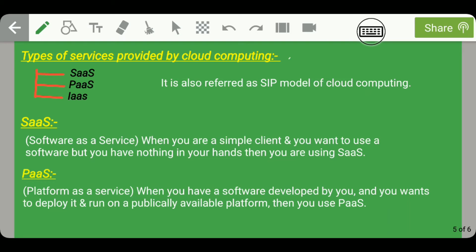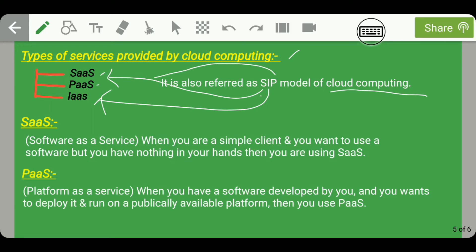Now let's talk about the types of services provided by cloud computing. There are basically three types: SaaS, PaaS, and IaaS. This is also referred to as the SIP model of cloud computing, where S represents SaaS, P represents PaaS, and I represents IaaS.